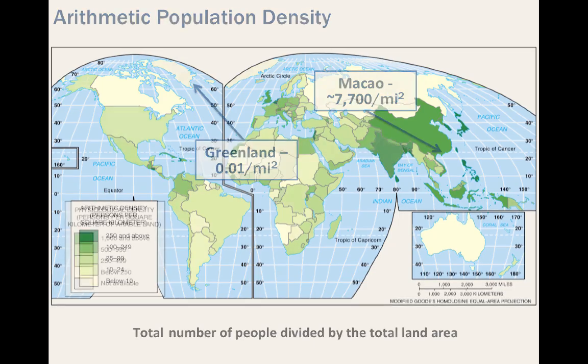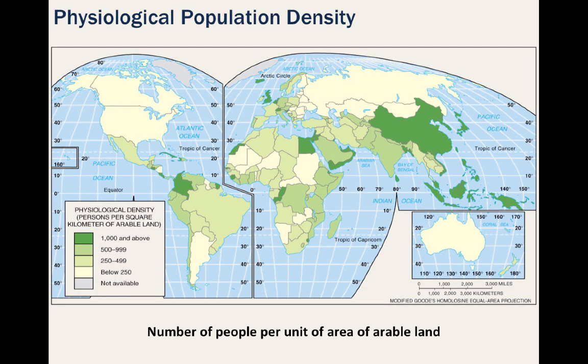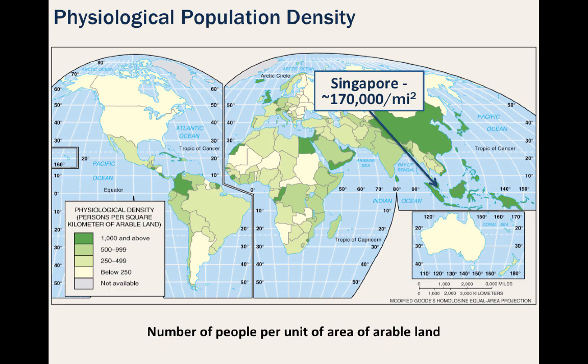Next up, physiological population density is measured as the number of people per unit of arable or farmable land. Singapore, whose population is 100% urban, has a physiological density of around 170,000 people per square mile, whereas Australia's is only at 17 people. A higher number generally indicates a greater strain on the population in terms of food. However, we have to consider the modern world we live in. A richer population, such as those in Singapore, can afford to import food from around the world.